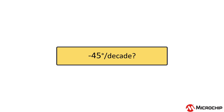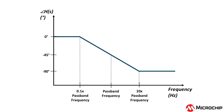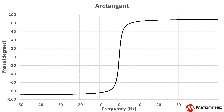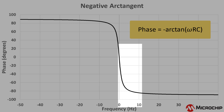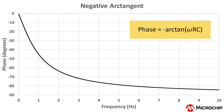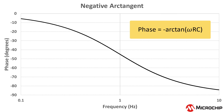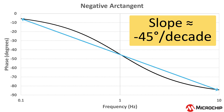How do we get the minus 45 degrees per decade for phase? The phase of a single pole system starts at zero, then a decade before the cutoff frequency it starts to go down with a slope of minus 45 degrees per decade. It does this for two decades and then stops. In our case of the RC single pole filter, it's negative arctangent omega RC, so it looks like this. If you zoom into the part that is one decade before and one decade after the cutoff frequency — in this case at 1 Hz — then change the x-axis to be logarithmic, you can see that the slope is roughly minus 45 degrees per decade.